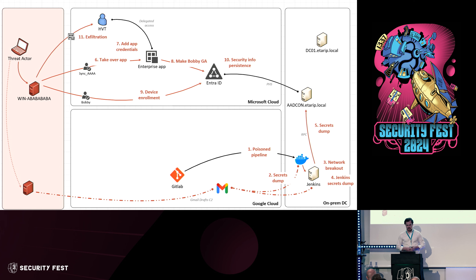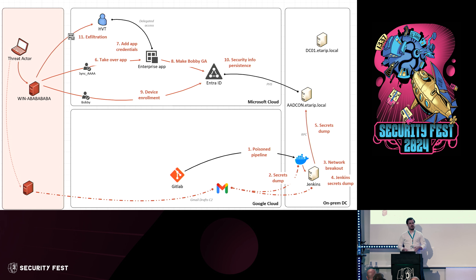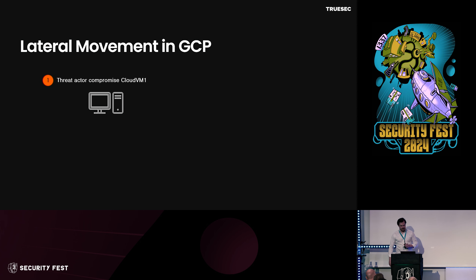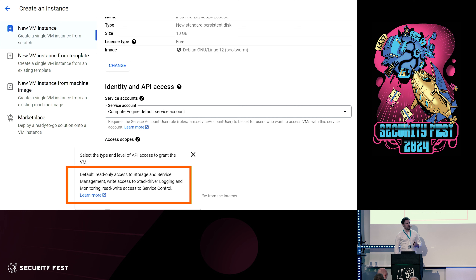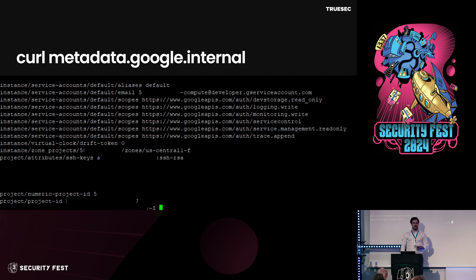There are a few things we still need to figure out. One is how they got access to the GitLab account, which is hosted in Google Cloud. The other is that just because you can reach the Jenkins server over the network, you wouldn't suddenly be administrator — you need credentials first. What they found in that first container run were credentials to SSH into a machine in GCP. When you compromise one machine in GCP, they have this default setting of using the default service account, which has read access to buckets among other things.